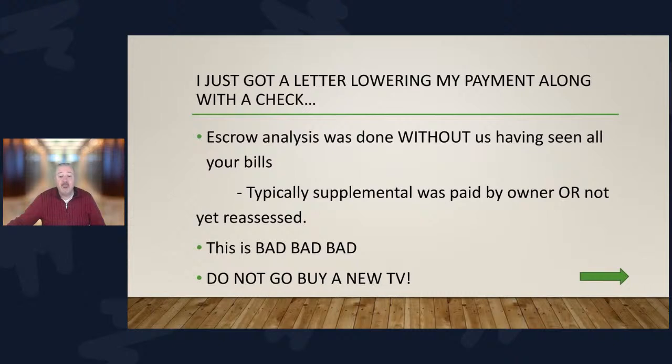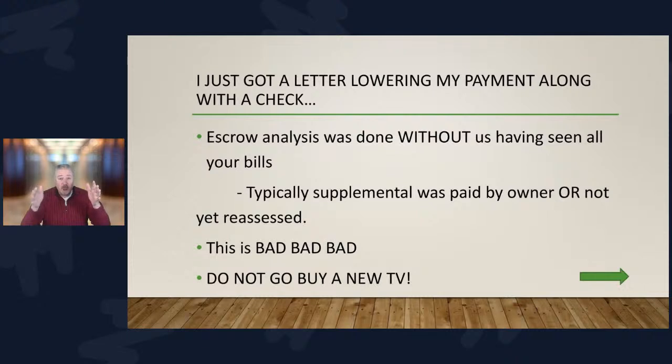Typically the escrow analysis was done without seeing all your bills — usually because the supplemental bill has not yet been sent out or it was paid by the owner directly. Some counties are taking anywhere from nine to 24 months to process a change in ownership. When there were a lot of transactions happening, it was sometimes taking a year to two years for the county to process every change in ownership and then backdate and send the supplemental bill.